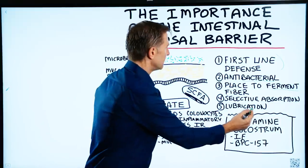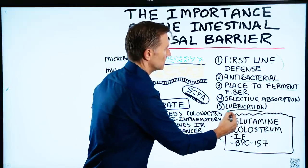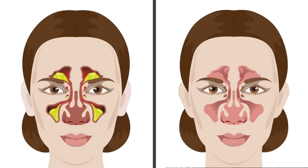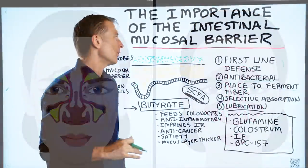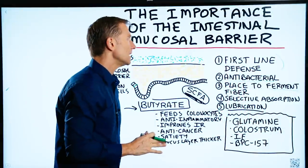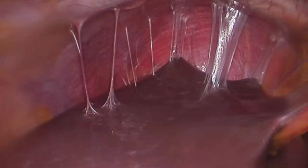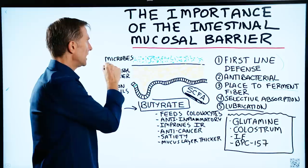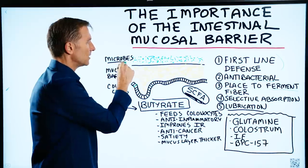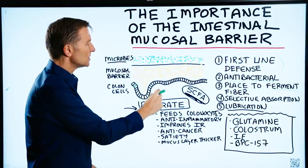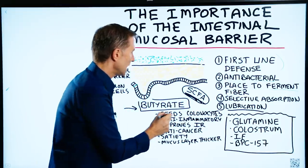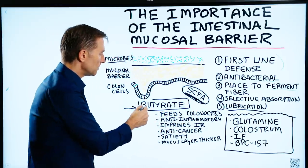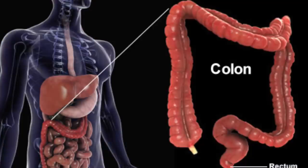Another function of this barrier would be lubrication. People are always concerned about mucus, not wanting it in their body, but your body does need this mucus to provide lubrication. So these microbes eat fiber, turn it into short-chain fatty acids — one being butyrate — and then butyrate feeds the colon cells.